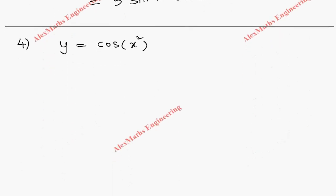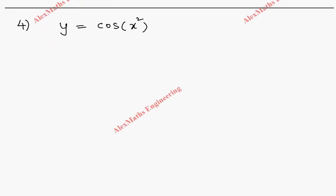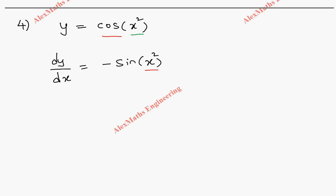Next: y = cos(x²). Here the outer function is cos and the inner function is x². First we differentiate the outer function: the differentiation of cos x is −sin x, so here it is −sin(x²) because the inner function should be written as it is. Once the outer differentiation is completed, we differentiate the inner function: x² differentiates to 2x. So the final answer is −2x·sin(x²).